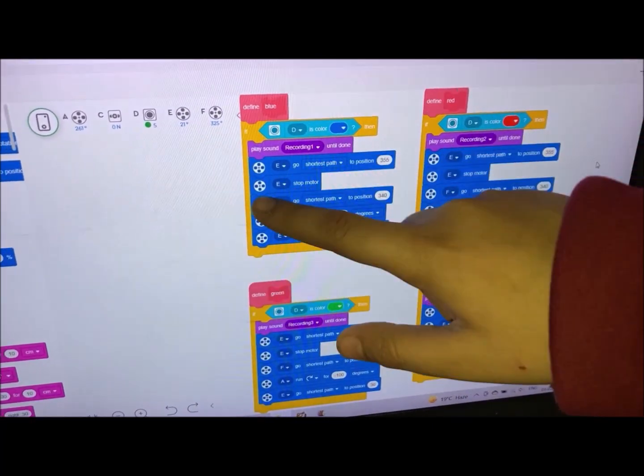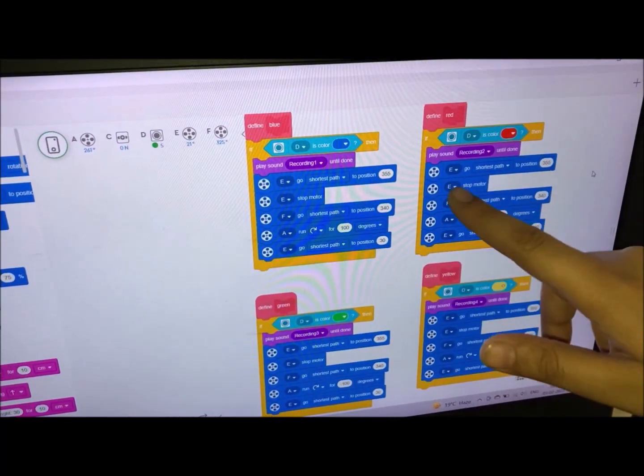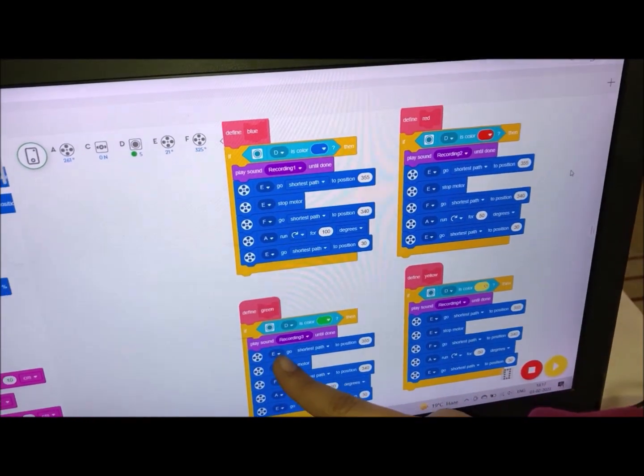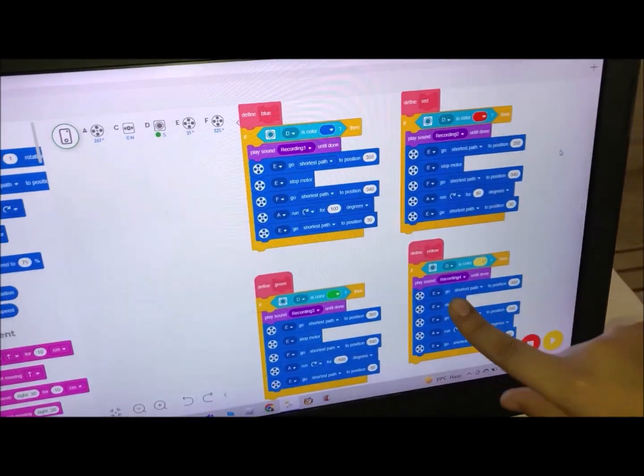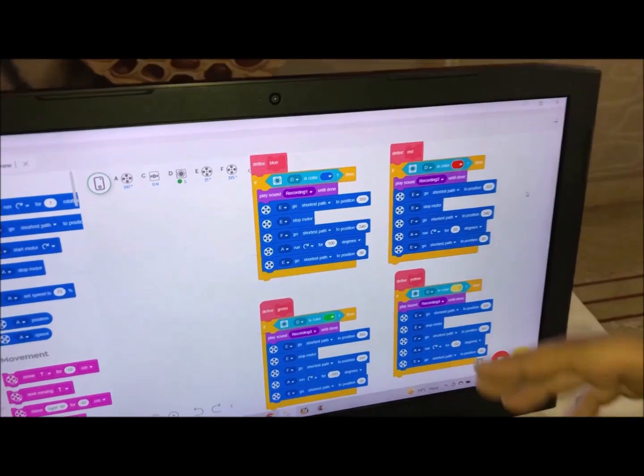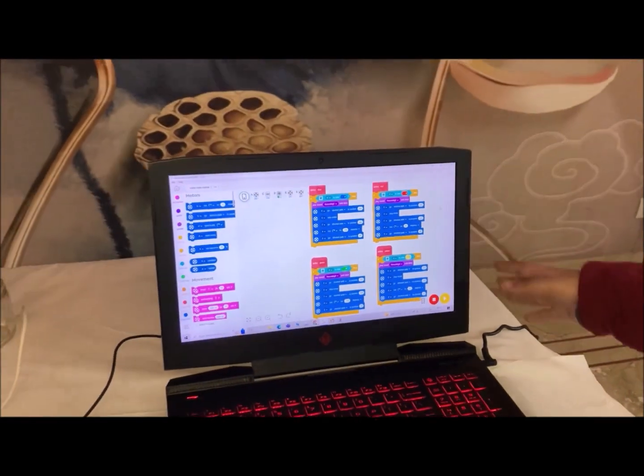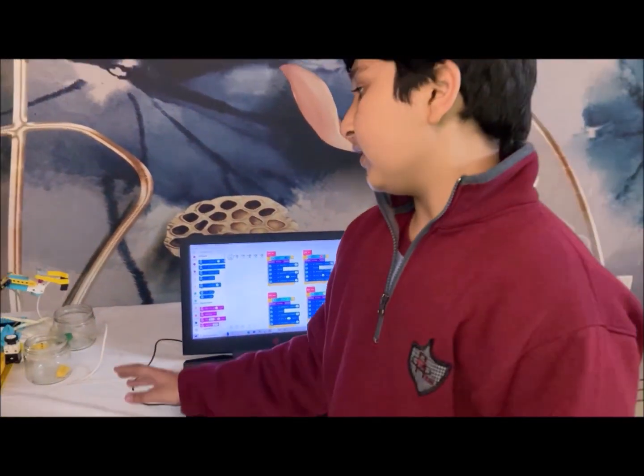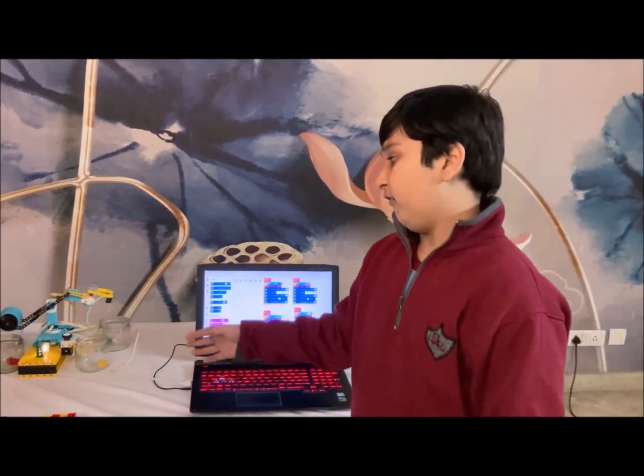We have the color blue over here, the color red over there, the color green over there, and the color yellow over here. As you can see, these four subparts control the different colors, when they are picked up and where they are placed.